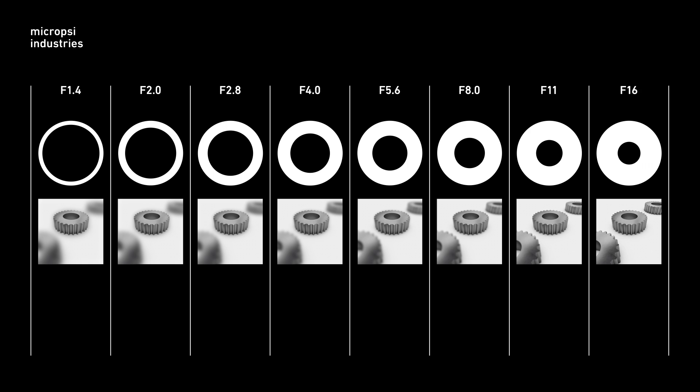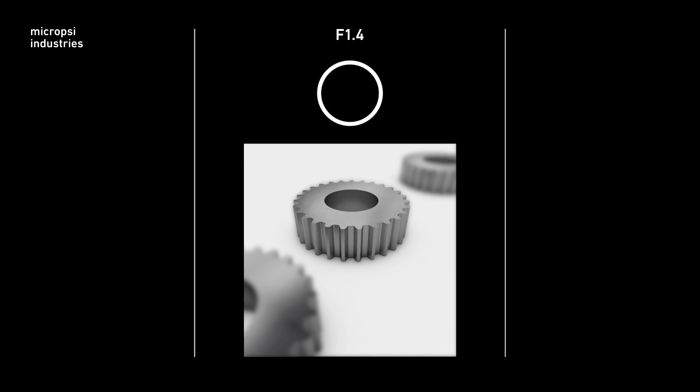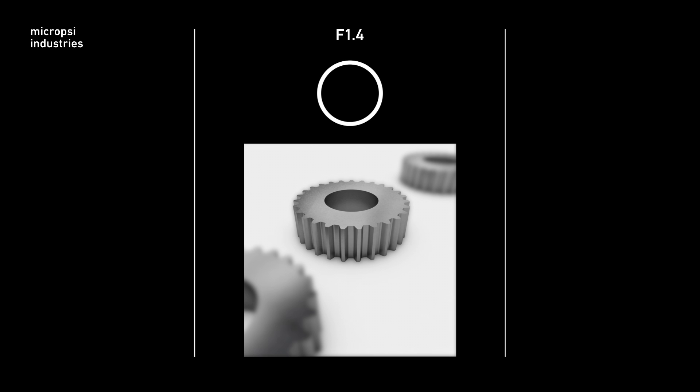Aperture ranges from f-stop 1.4 to 16. The lower the aperture, the more open the lens. The more open the lens, the more blurry your background and foreground. Conversely, when you set aperture to a higher value, you make the lens opening narrower and the background and foreground sharper.